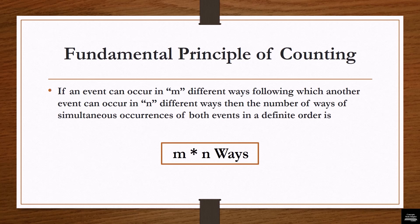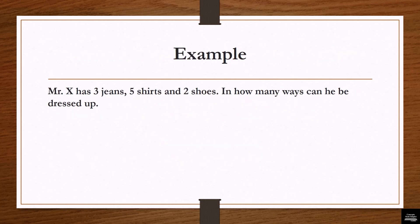I think I have made my point clear. If you are still not convinced, just pause the video and read the statement, and I hope you will understand. So let's move forward and solve a problem based on the principle we just learned. The question is: Mr. X has three jeans, five shirts and two shoes. In how many ways can he be dressed up?